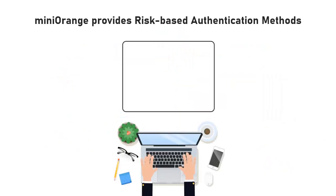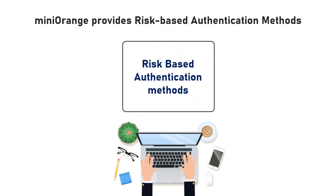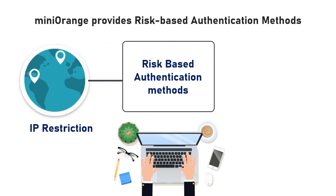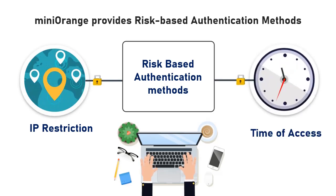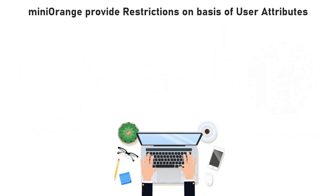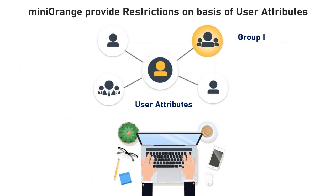In addition to the 15 plus MFA methods, Mini Orange also provides risk-based authentication, which includes authentication based on IP restriction and authentication based on time of access. Mini Orange can also provide restrictions on the basis of user attributes like groups and many more.